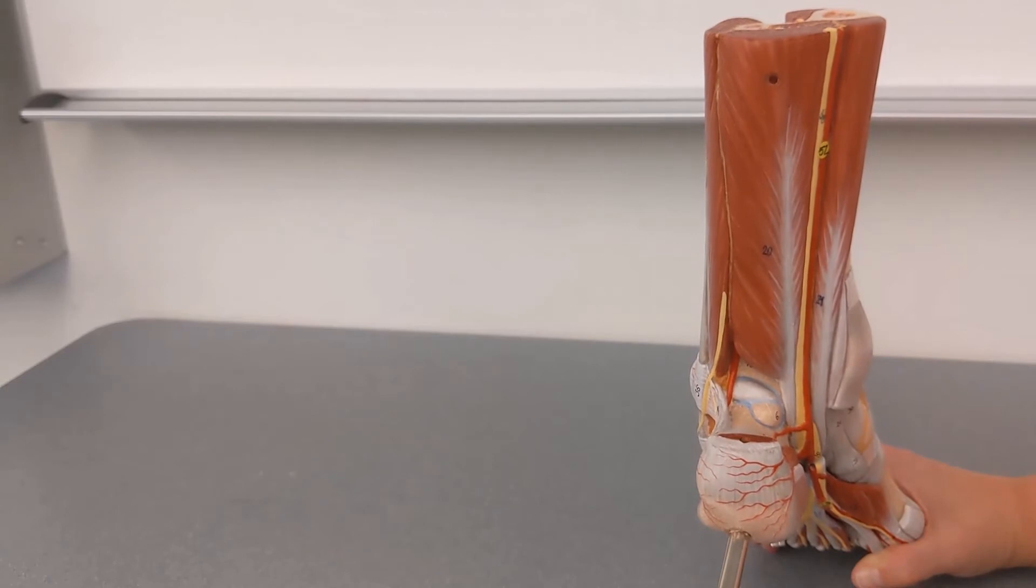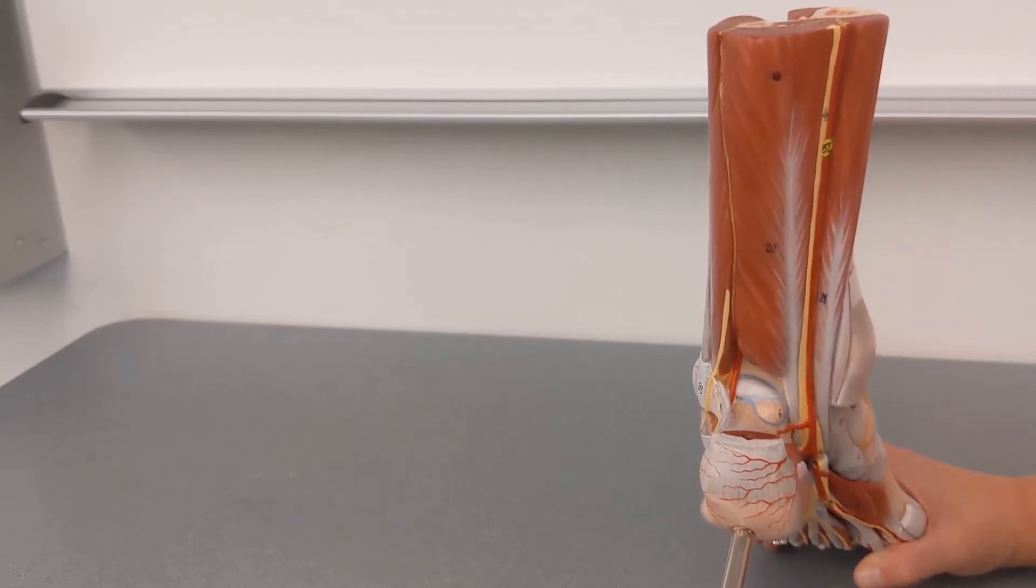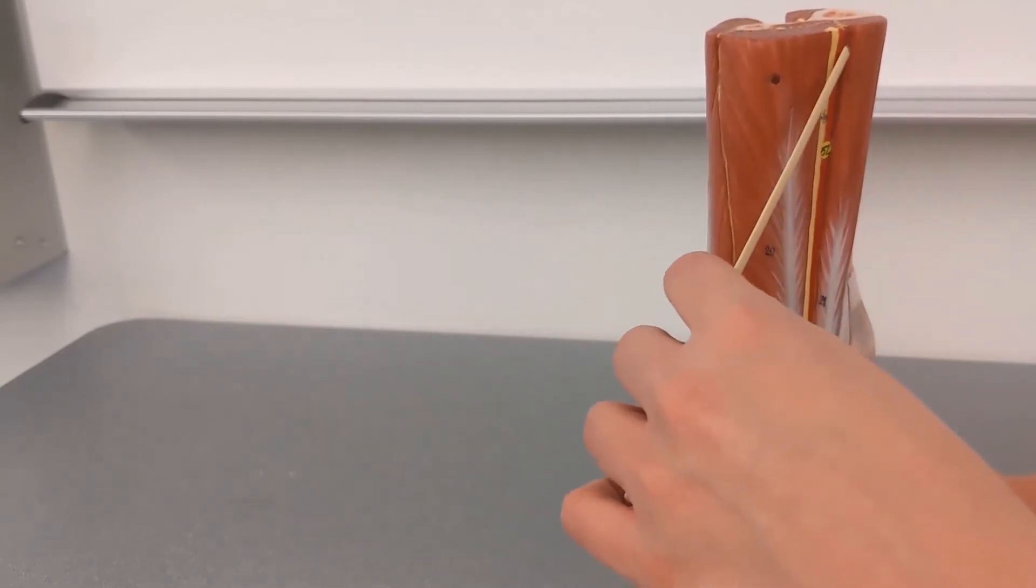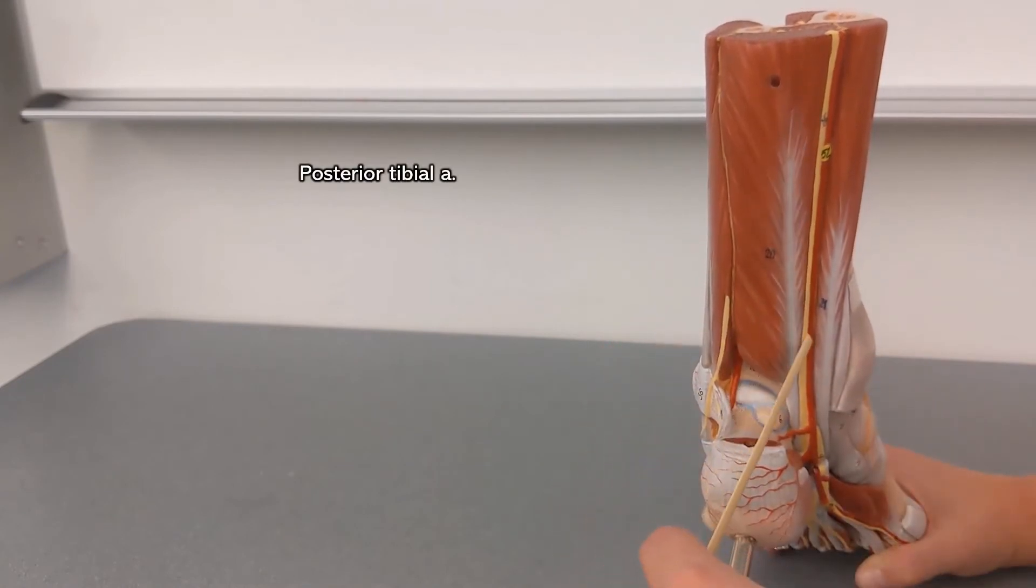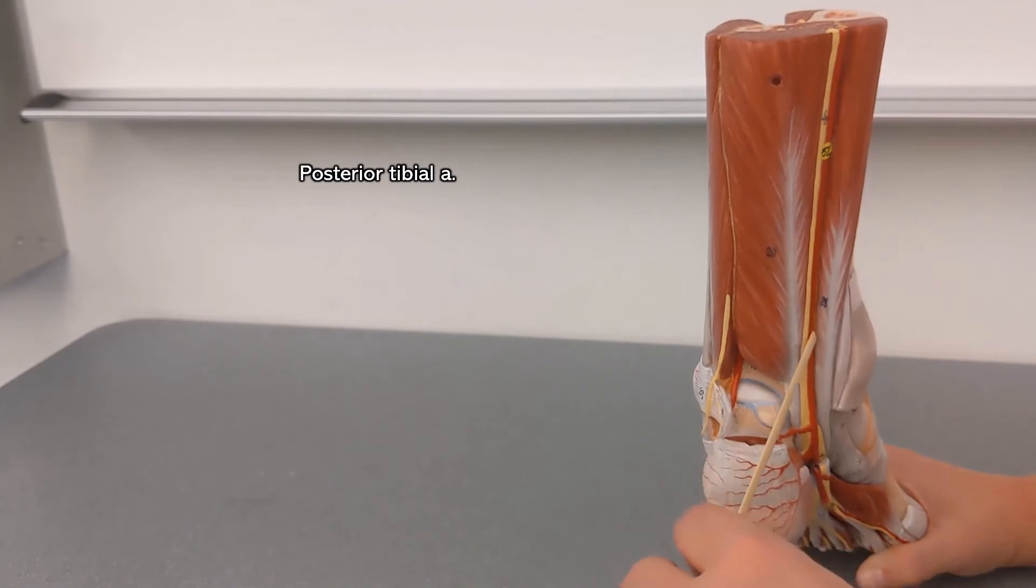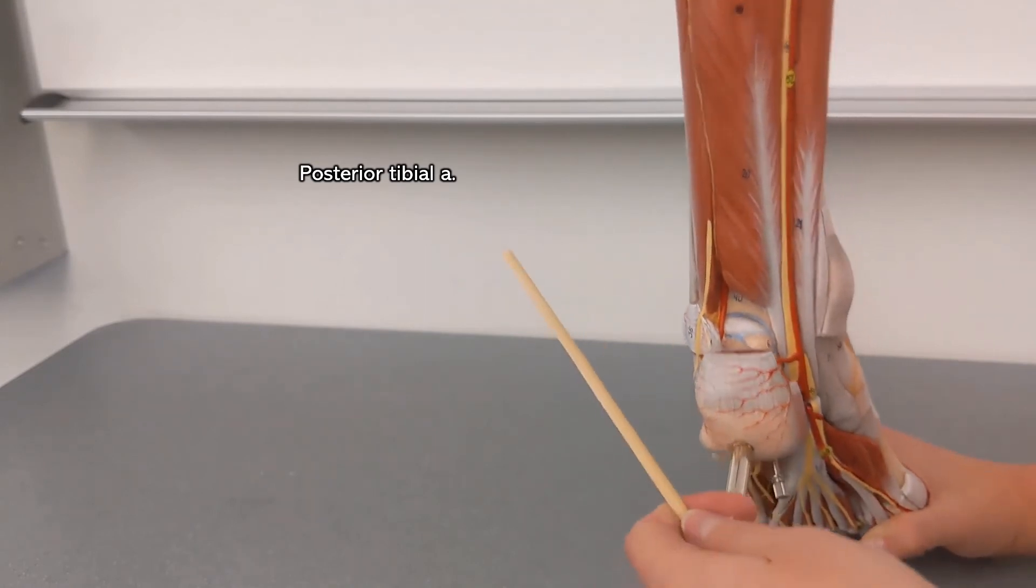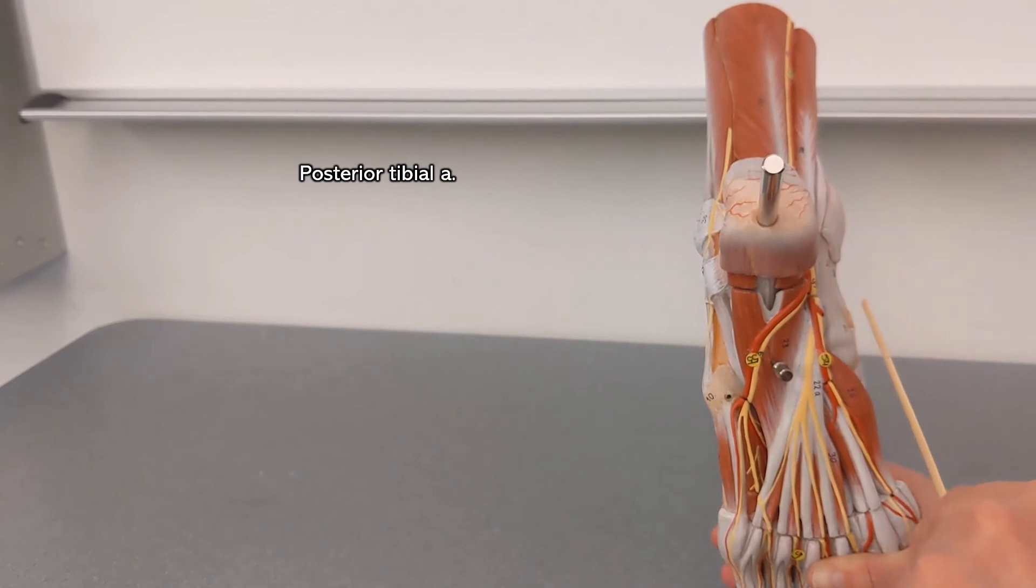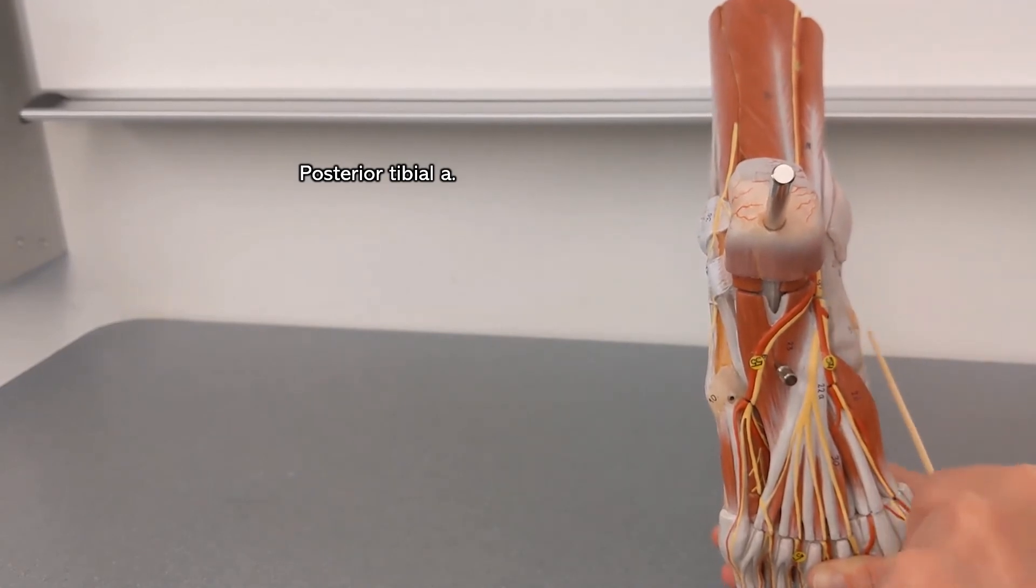So all of the blood that ends up on the plantar region of your foot, the bottom of your foot, is coming from the posterior tibial artery. That posterior tibial artery passes down and as it reaches the underside of your foot, it splits into two.